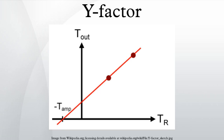The slope of this line is equal to the amplifier power gain. The X-intercept of the line is equal to the negative of the amplifier noise temperature TAMP in Kelvin.